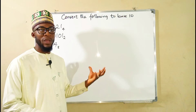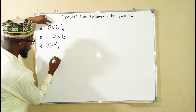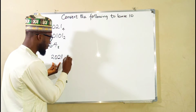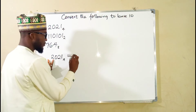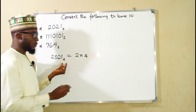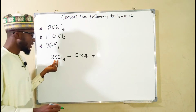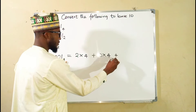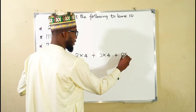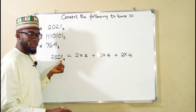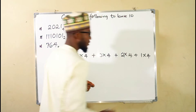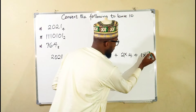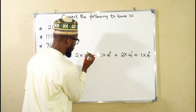The first thing you need to do is to transform the number in powers of its base. Let me start with 2021 in base 4. To transform this in powers of its base: you take the first digit which is 2 and multiply it with the base, which is 4. You add, take the second number which is 0, multiply it with the base 4. You add, take the third number 2, multiply it with the base 4. And lastly, we have 1, multiply it with the base 4. Then we assign indices to these bases starting from right to left: 0, 1, 2, 3.